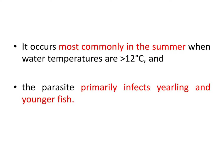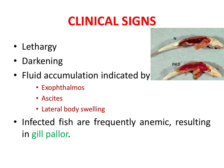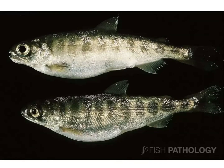The clinical signs of PKD include lethargy, darkening, fluid accumulation indicated by exophthalmia, ascites, and lateral body swelling. Infected fish are frequently anemic, resulting in gill pallor. Here you can see a comparison between a normal fish above and a PKD-affected fish below — the lateral body swelling is very clearly visible in the fish affected by PKD.